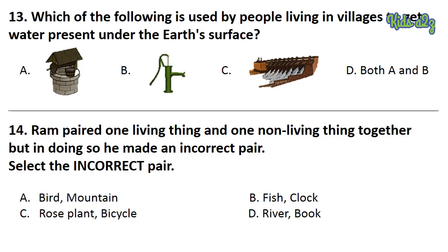Question 13: Which of the following is used by people living in villages to get water present under the earth's surface? The answer is Option D — that is, both A and B. Question 14: Ram paired one living thing and one non-living thing together, but in doing so he made an incorrect pair. Select the incorrect pair. The answer is Option D — River and Book.